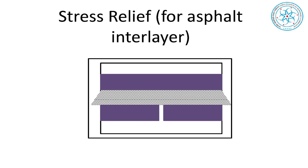In a jointed rigid pavement over which we place a bituminous overlay, any layer placed is subject to bending — and bending means bottom tension — which causes cracking over time. That crack is assisted by the joint gap below, and naturally the crack propagates upward. The geosynthetic takes care of the tensile stress that is likely to develop. So any overlay is not complete without use of a geosynthetic.